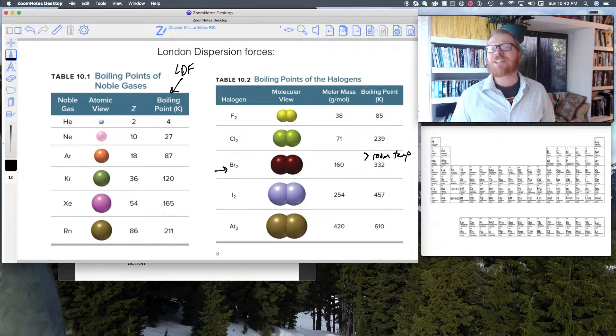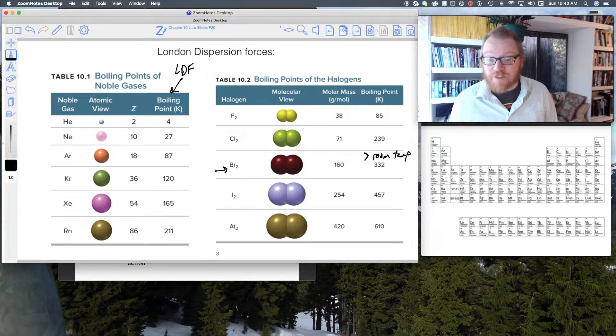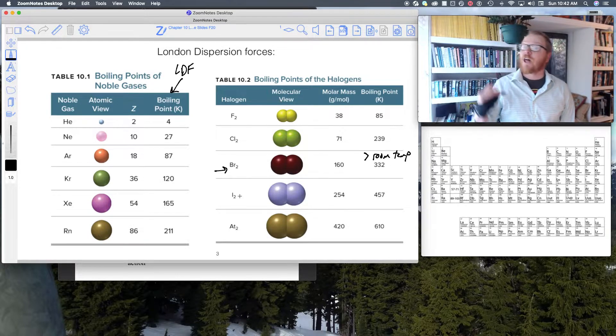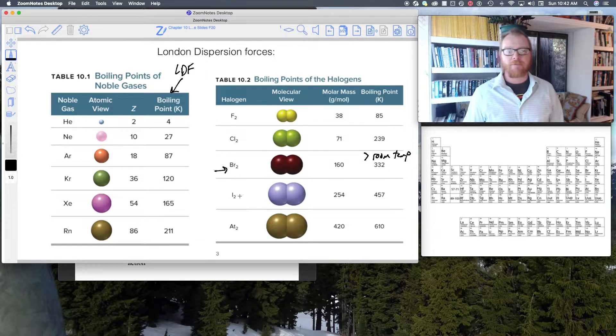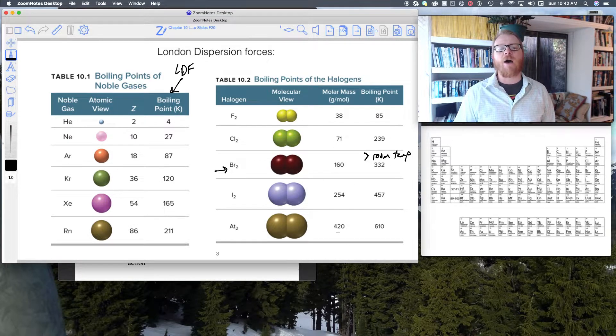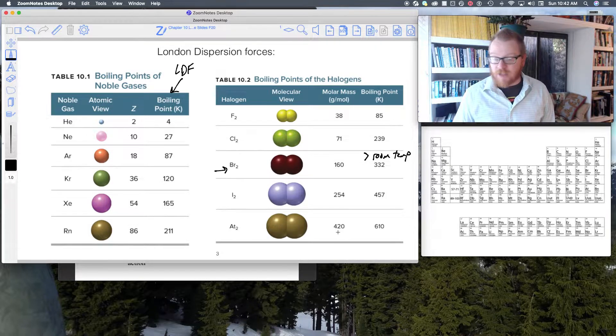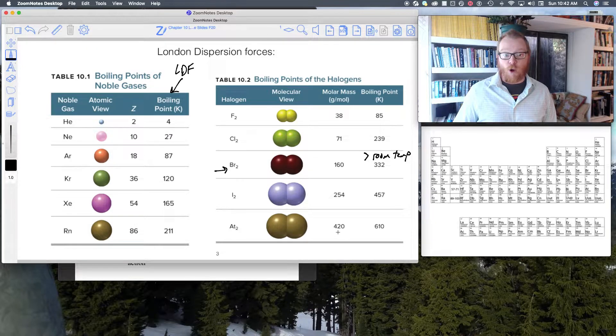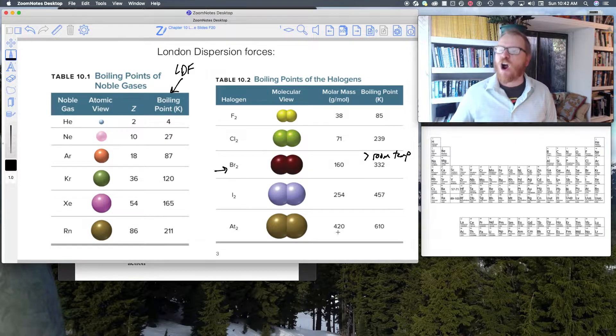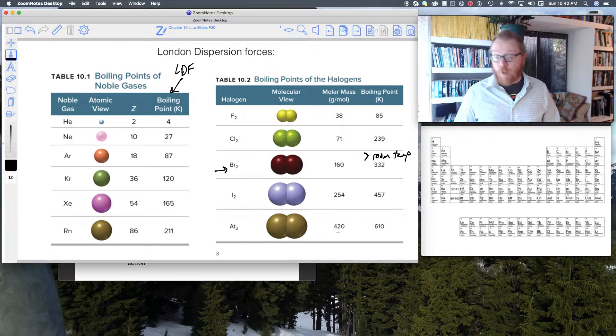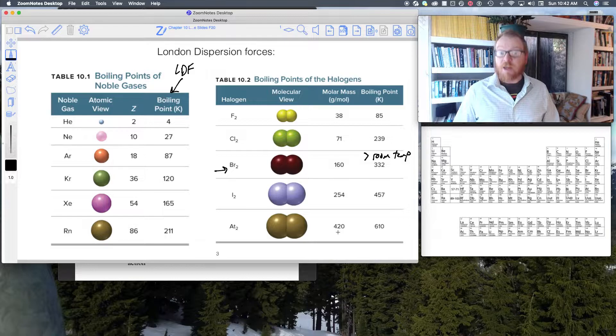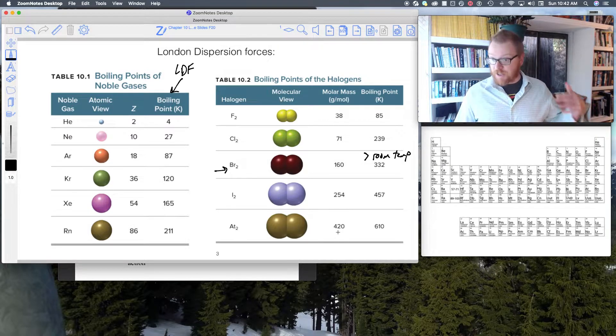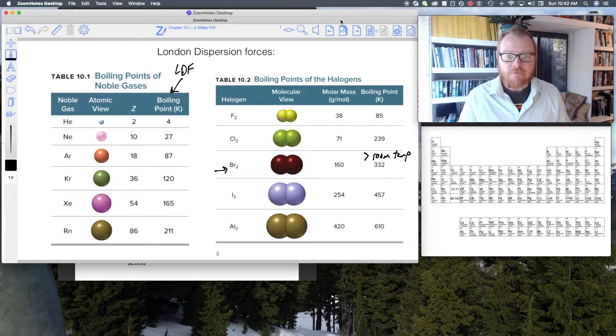332 kelvin is a really large boiling point for a non-polar molecule. If you go to iodine, iodine is actually a solid at room temperature. It has such strong London dispersion forces. This is all about the size of the atom. The bigger these atoms are, the more electrons, the more protons there are, and the more this temporary induced dipole moment, the stronger it becomes.